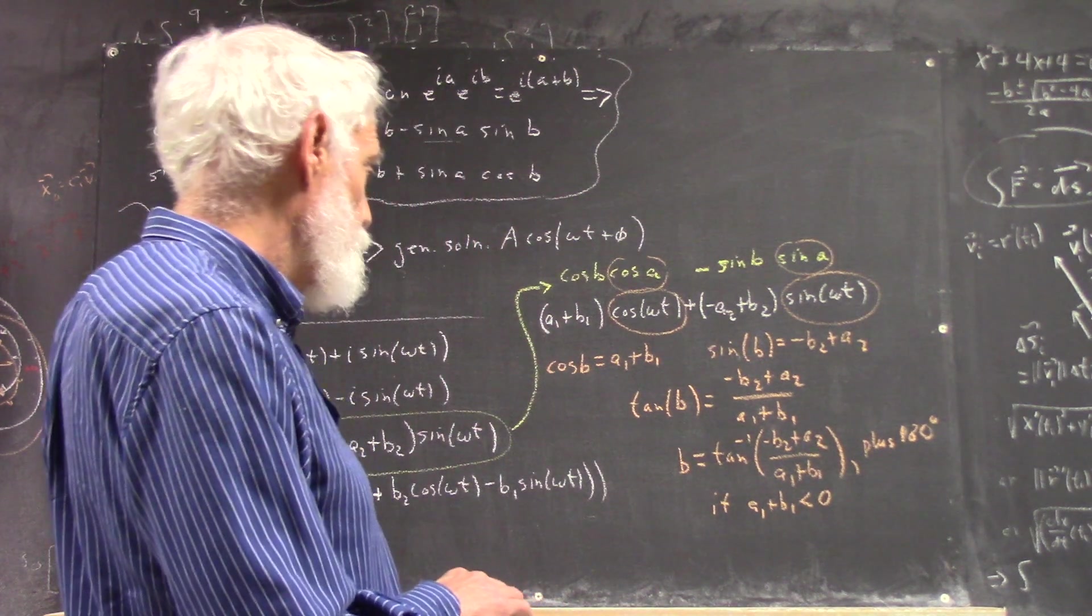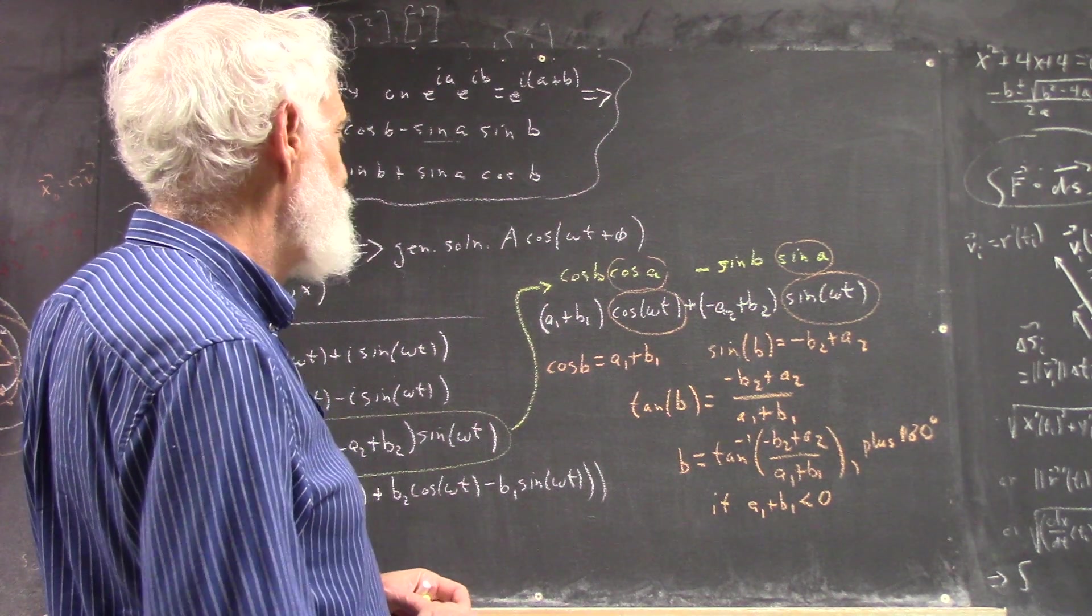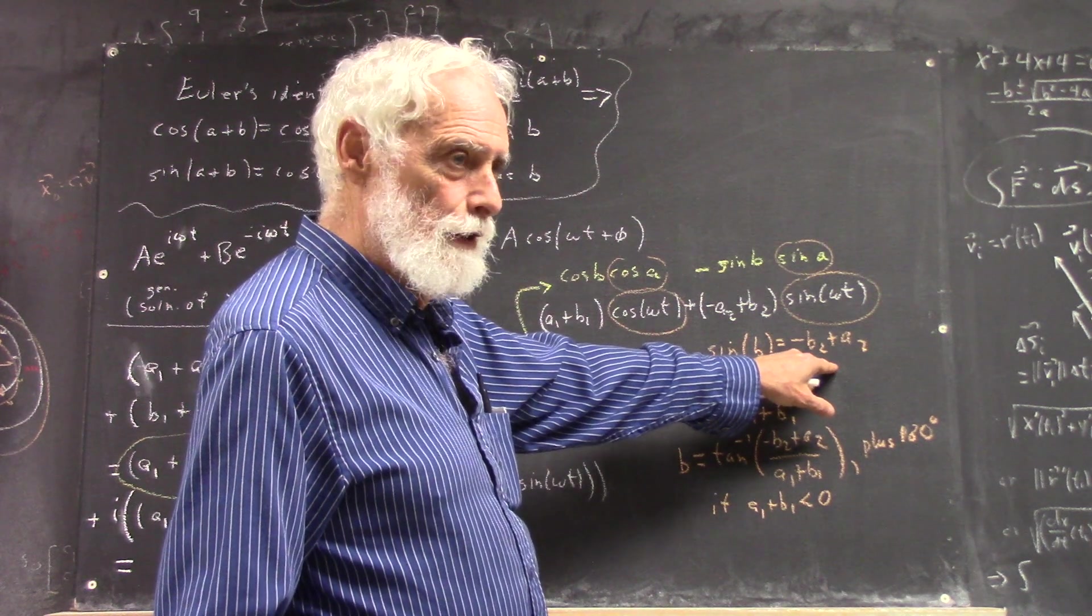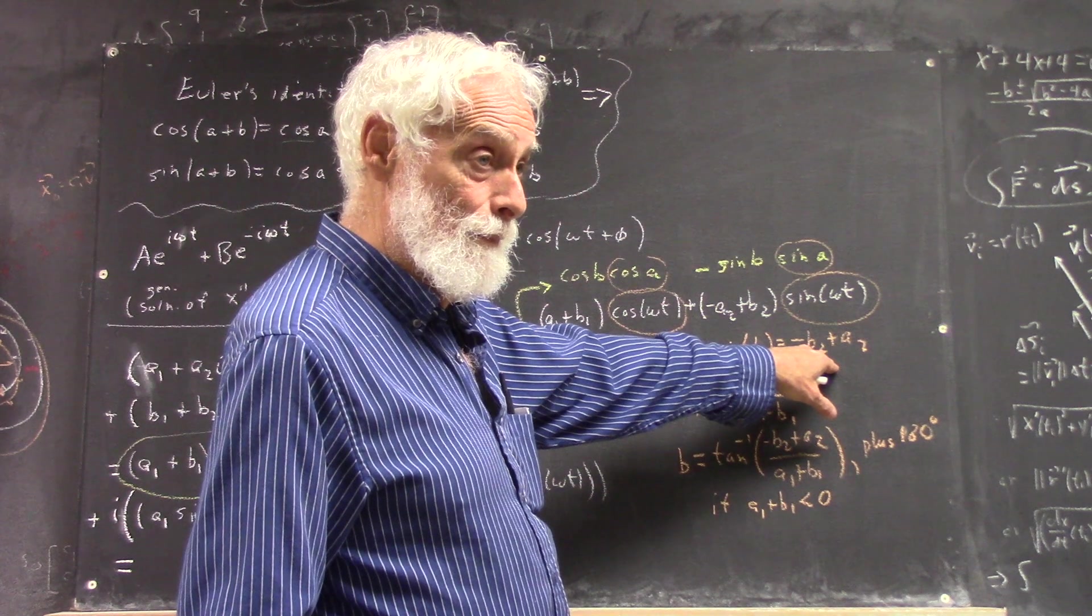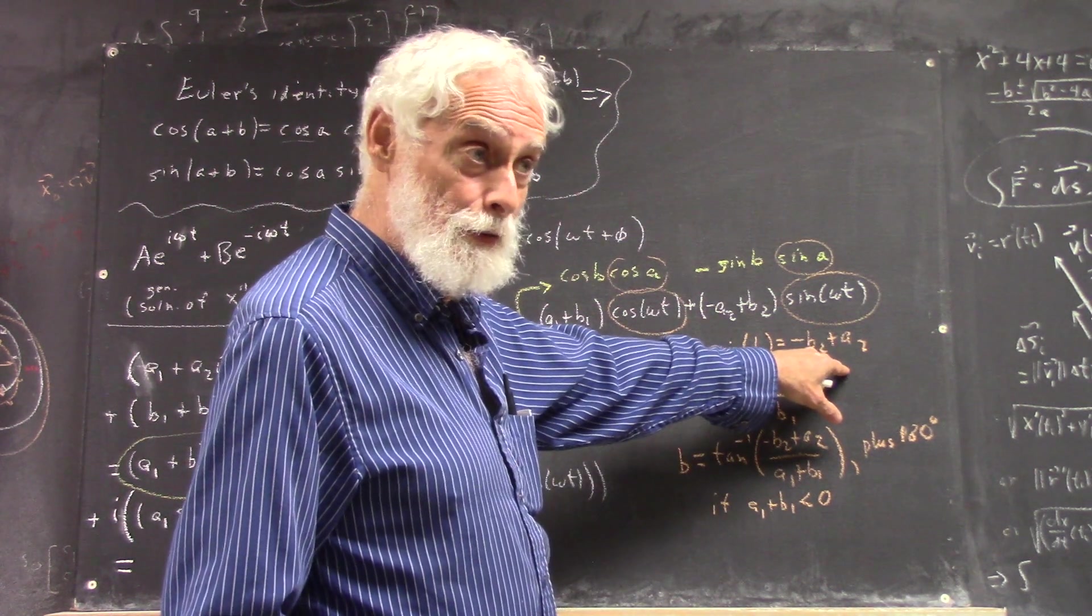Okay, so anyhow, there's your value of b. However, the cosine of b won't necessarily equal a1 plus b1. The sine of b won't necessarily equal a2 minus b2. Because these things can be bigger than 1 or less than negative 1.